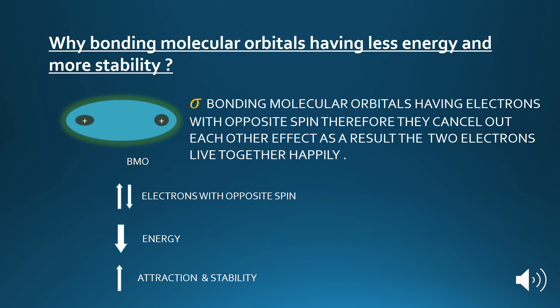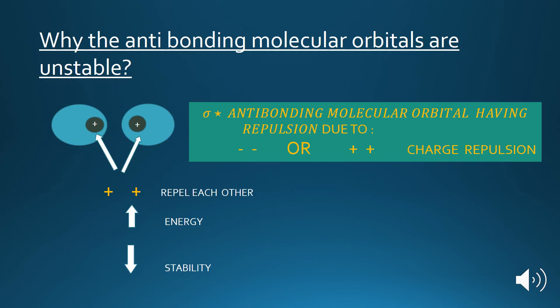Why do bonding molecular orbitals have less energy and are more stable? The bonding molecular orbitals have electrons with opposite spin, so they cancel out each other's effect. As a result, the two electrons coexist harmoniously, having less energy and greater stability. Why are anti-bonding molecular orbitals unstable? The anti-bonding molecular orbitals have repulsion due to same charges — the s orbitals with the same positive charges come close to each other, repel each other, and become high in energy and less stable.